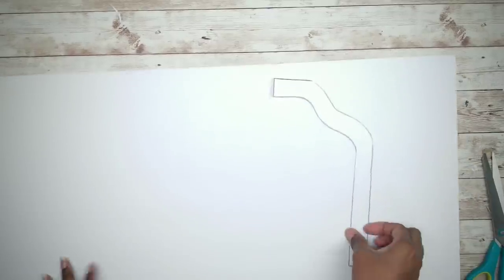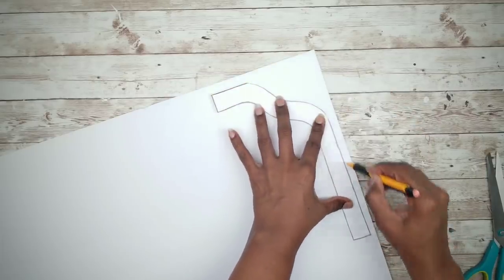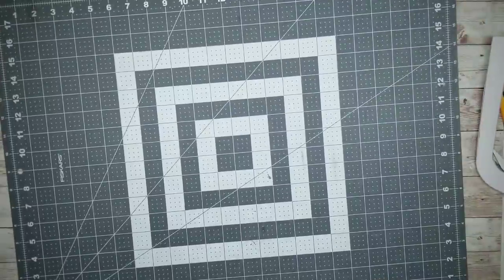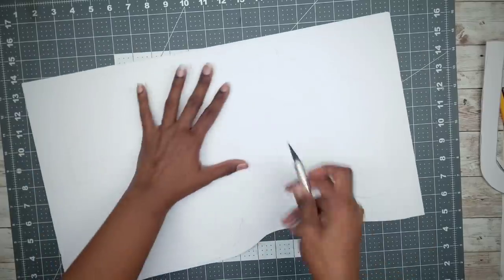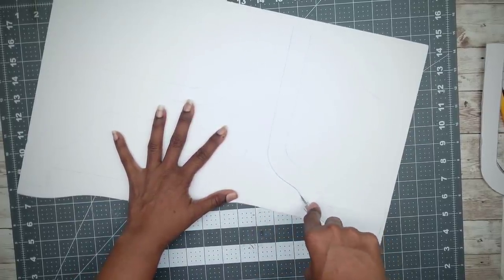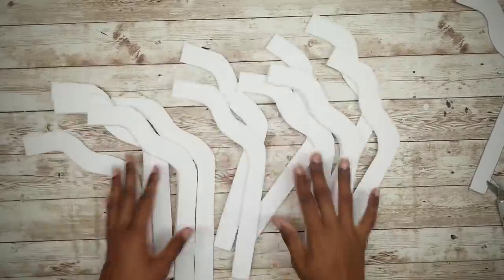Grab your foam board and we're going to trace that template onto the board. We are going to need 12 of these arches. Now we're going to lay out our cutting mat and cut out all of our arches using an exacto knife. Make sure you use a new and sharp blade for the smoothest and easiest cuts. Here are all of our arches stacked up and ready to go.